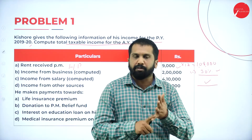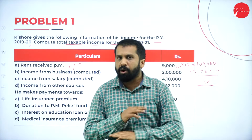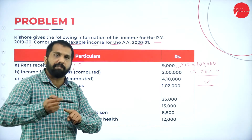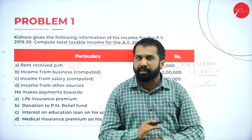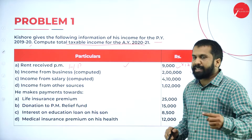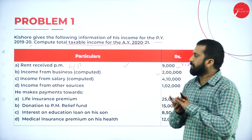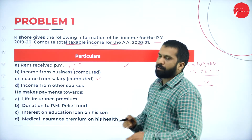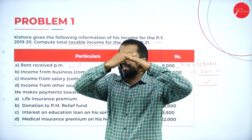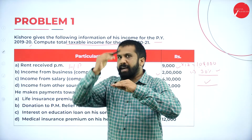House property is done. Second, income from business — computed means all calculations are done, so take it directly at 2 lakh. Income from salary computed — take it directly. Remember the format from the previous session: income from salary, income from house property, income from business or profession, income from capital gain — add everything and calculate tax. Income from other source: 1 lakh 2 thousand — take it directly.